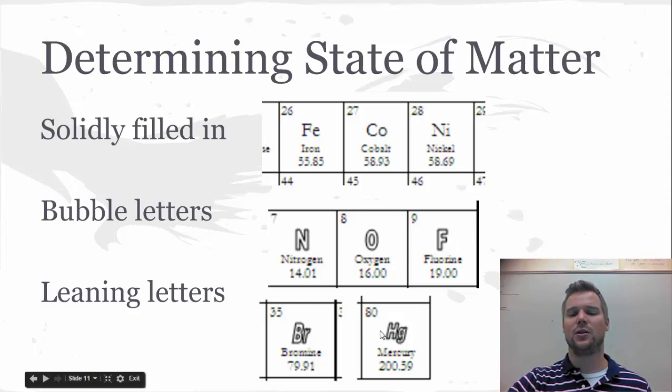Finally, the only two, these are the only two liquids at room temperature. Bromine and mercury, leaning letters, they're italicized, so their letters are leaning. Leaning letters are liquids.